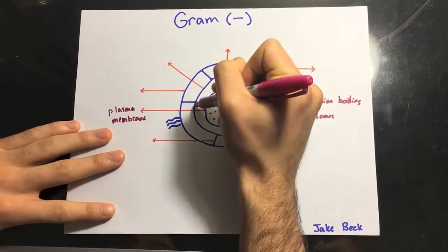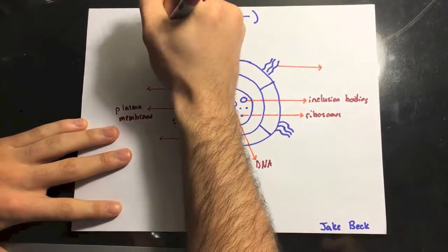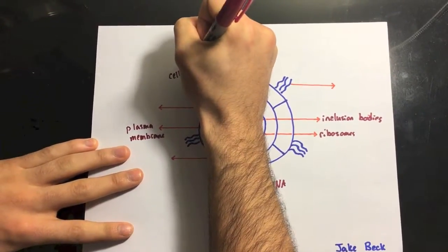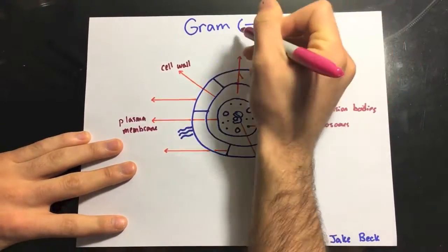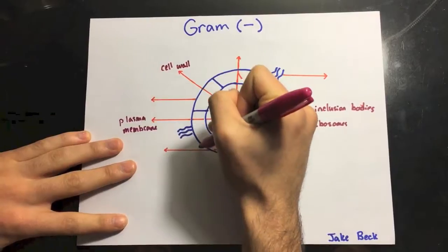Here is the cell wall, and the gram-negative cells also have an outer membrane.